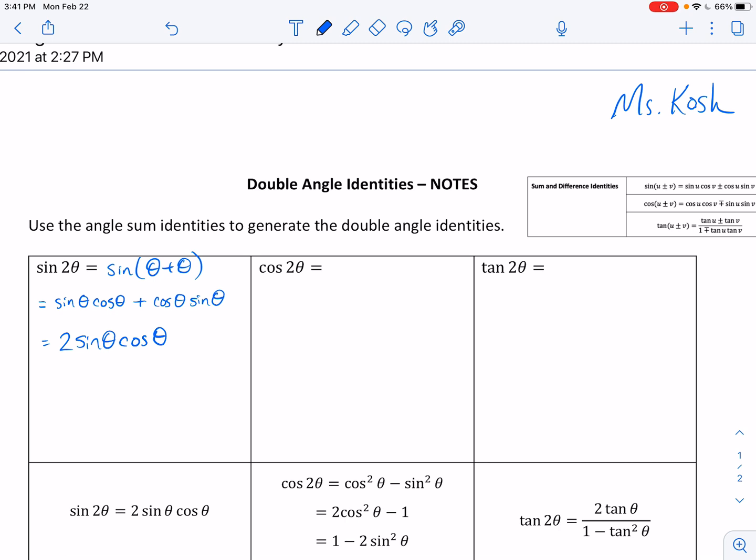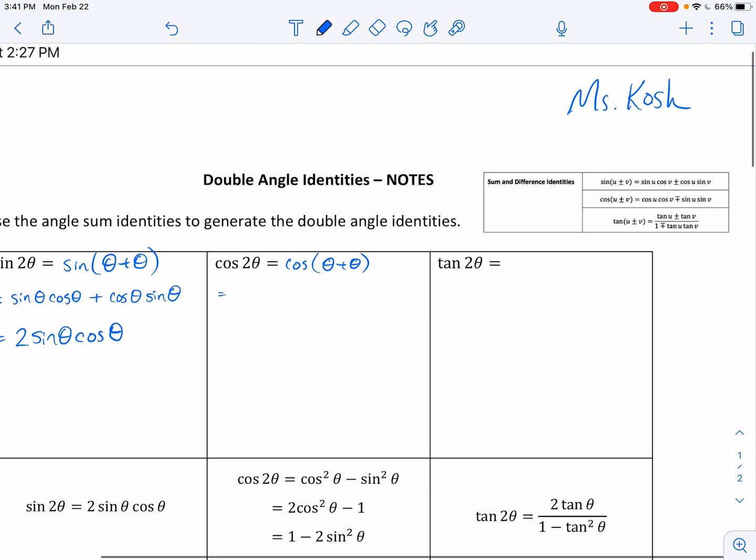Next, cosine of 2 theta would be equal to cosine of theta plus theta. And so now we can say, well, this one I remember, cosine cosine, sine sine with the opposite S-I-G-N. So cosine cosine minus sine sine. And you'll also start to see why it's so important we include these variables. I should have mentioned that in the sum and difference video because it doesn't matter here because they're all the same variable.